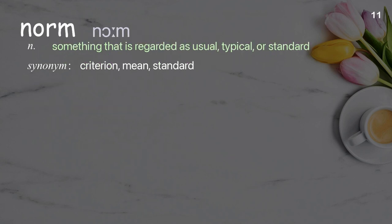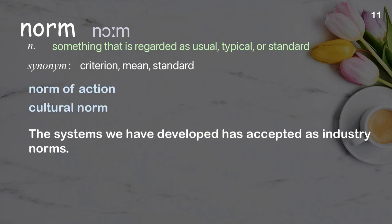Norm. Something that is regarded as usual, typical, or standard. Examples: norm of action, cultural norm. The systems we have developed have been accepted as industry norms.